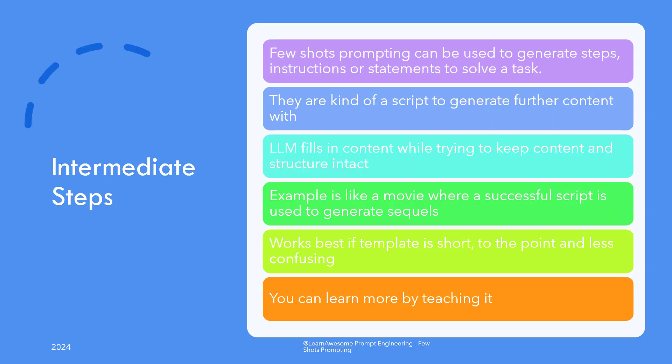Few-shot examples need not be limited to question and answer or situation and action. They can be expanded to incorporate intermediate steps to break down the problem into step-by-step instructions, or add statements that clarify the decision-making process that leads to the next step. Few-shot examples are kind of a script to generate future content with, and ChatGPT follows the script brilliantly, filling it with its own novel content but keeping the original formatting and structure of the conversation intact. A non-language model example would be the Mission Impossible movie series, where the script for later editions seems to have been generated using a large language model using few-shot examples of earlier movies.